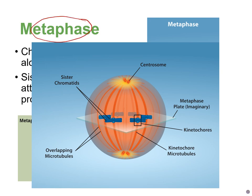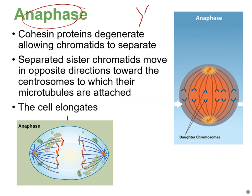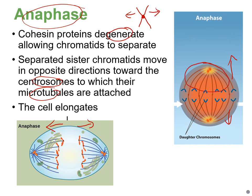Here's another look at metaphase from the textbook. The metaphase plate is imaginary — there's no real plate — but all chromosomes are lined up in the middle, with each sister chromatid on one side or the other. In anaphase, the cohesin proteins are degraded and the sister chromatids separate, moving toward the centrosomes where the microtubules were attached. The cell also elongates during this time.